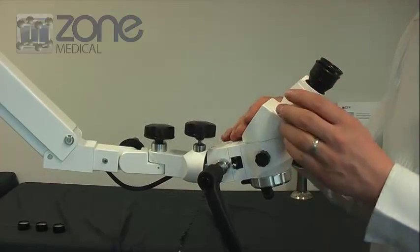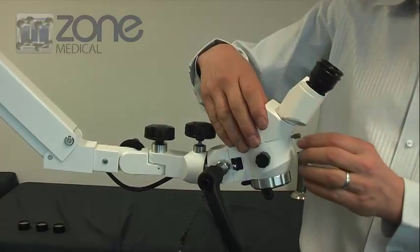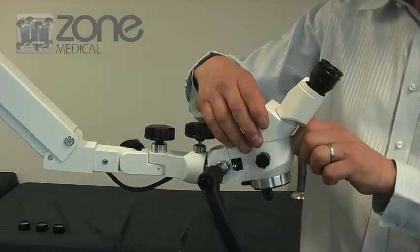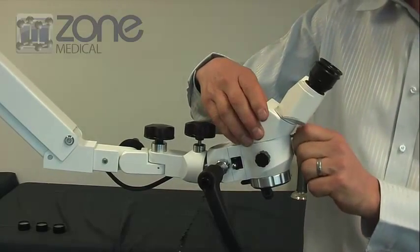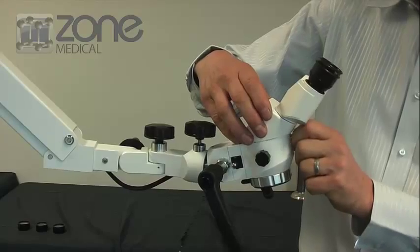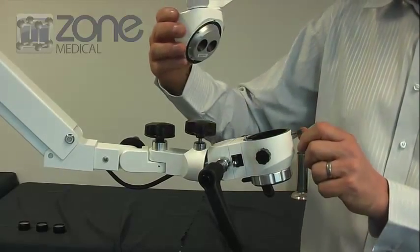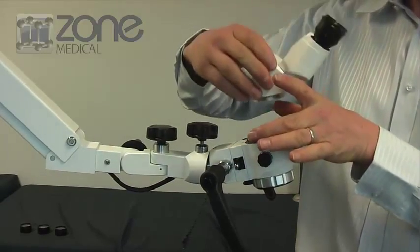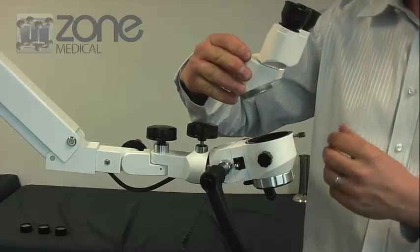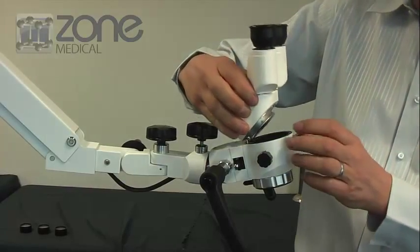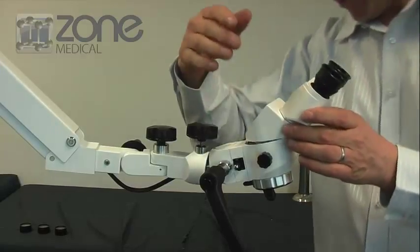You've got a 45-degree angled eyepiece. You can remove that and place different types of eyepieces on. Unscrew this here and that comes straight off. You can place in the middle here a splitter that'll enable you to do digital video recording.